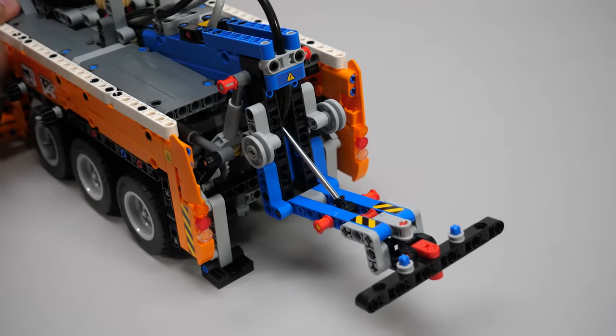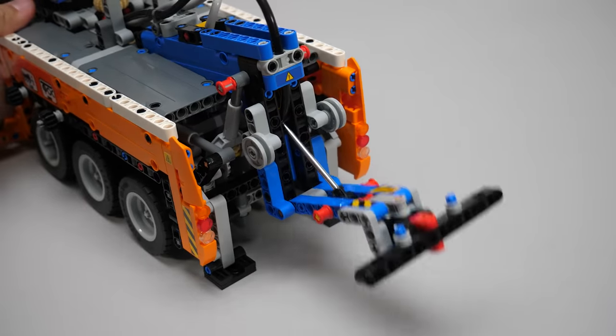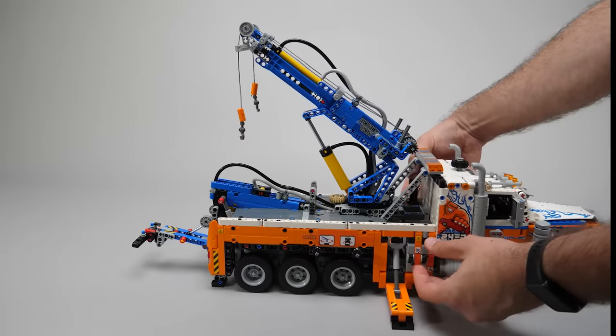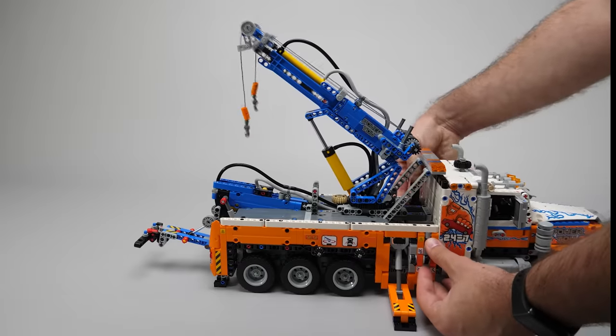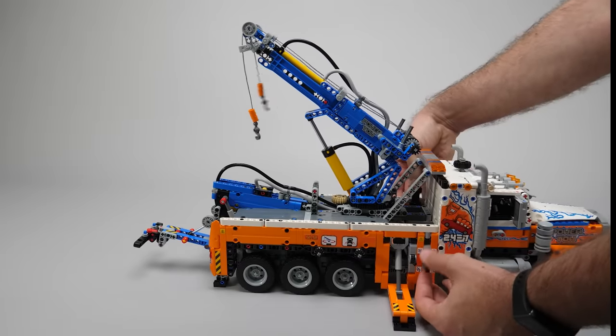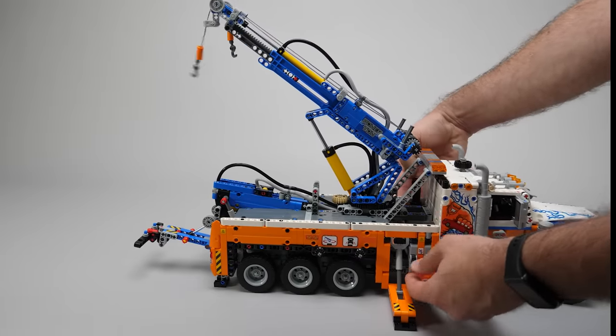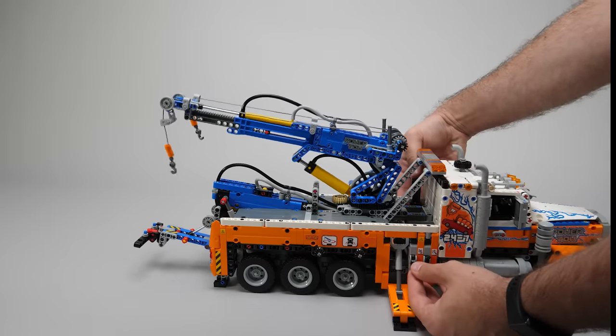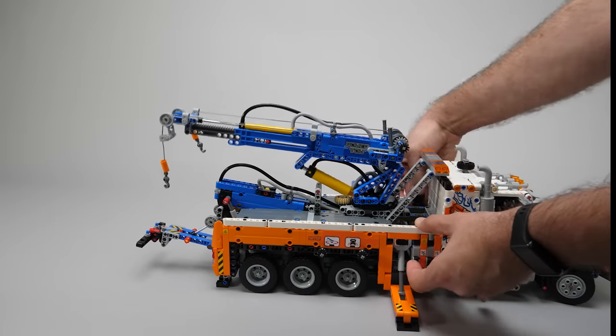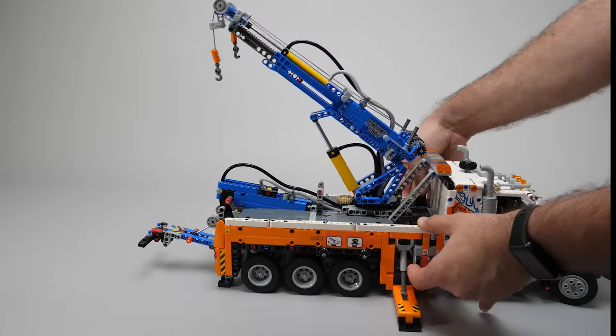Unfortunately the tow bar is not extendable. That function was not implemented. On the other side we have two switches, one for the boom extension and the other one to control the boom elevation. I really like how responsive are all the pneumatic functions. If I compare it to some previous more complex models the difference is really visible.